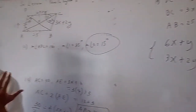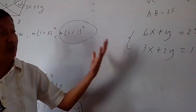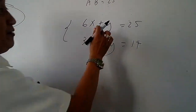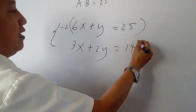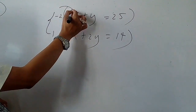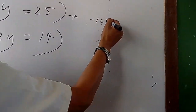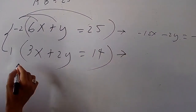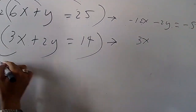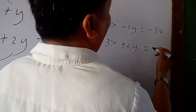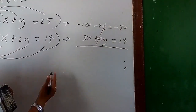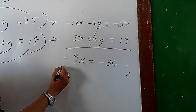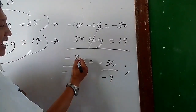There are three ways to solve this system, but I will use the elimination method to eliminate Y. Multiplying the first equation by negative 2 gives negative 12X minus 2Y equals negative 50. Adding this to 3X plus 2Y equals 14, the Y terms cancel, leaving negative 9X equals negative 36. Dividing both sides by negative 9, X is equal to 4.